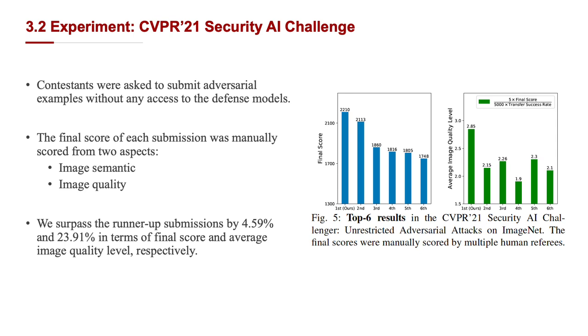In the adversarial competition, our training and validation models are both an ensemble of eight high-performance models. We report the final score and average image quality levels in Figure 5. It shows that our method outperforms other approaches by a large margin. In particular, we surpass the runner-up submission by 4.59% and 23.91% in terms of final score and average image quality level respectively. The final scores were manually scored by multiple human referees.